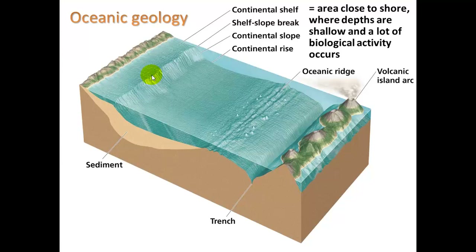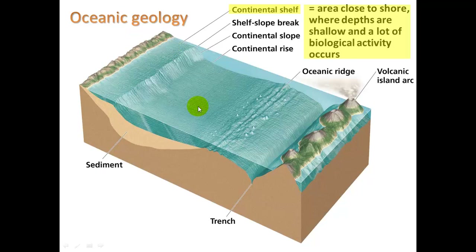Here's a stylized diagram showing the continental shelf along here, which is important because this is the area where depths are shallow and a lot of biological activity occurs. Here's an example of the ocean ridge and an example of an ocean trench. We get these trenches when we have one plate going underneath another plate, and that often forms volcanoes.